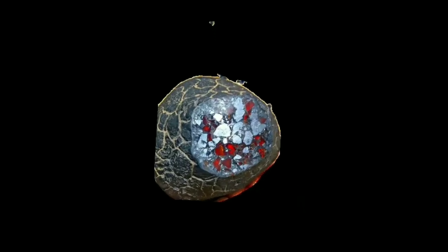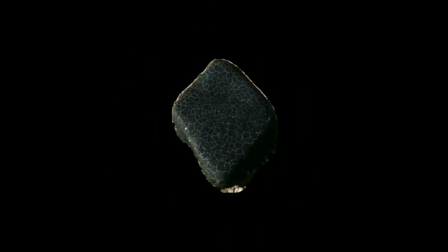The Widmanstetten pattern, a unique crystalline structure, is a hallmark feature of iron meteorites formed over millions of years of slow cooling in space.